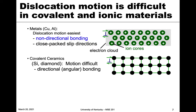However, in ceramics this is not the case. Starting with covalent ceramics such as silicon or diamond, dislocation motion is quite difficult. The reason is the highly directional or angular bond — each atom has a directional bond with the next one, requiring a lot of force to overcome these directional bonds. So dislocation motion is quite difficult, and in many cases we don't see it in any significant amount.